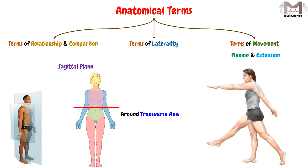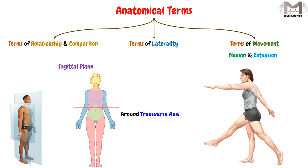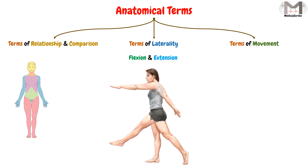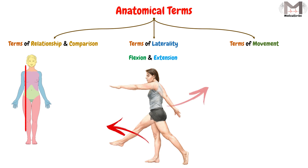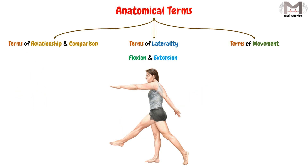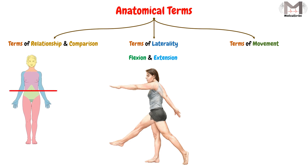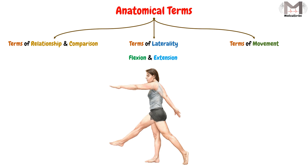Flexion and extension movements occur around the transverse axis of the structure. The sagittal plane limits the movement to occur only in the forward and backward direction — anterior and posterior — and cannot occur in any other direction. Movement around the transverse axis further obligates the structure to flex and extend only in the anterior and posterior direction.